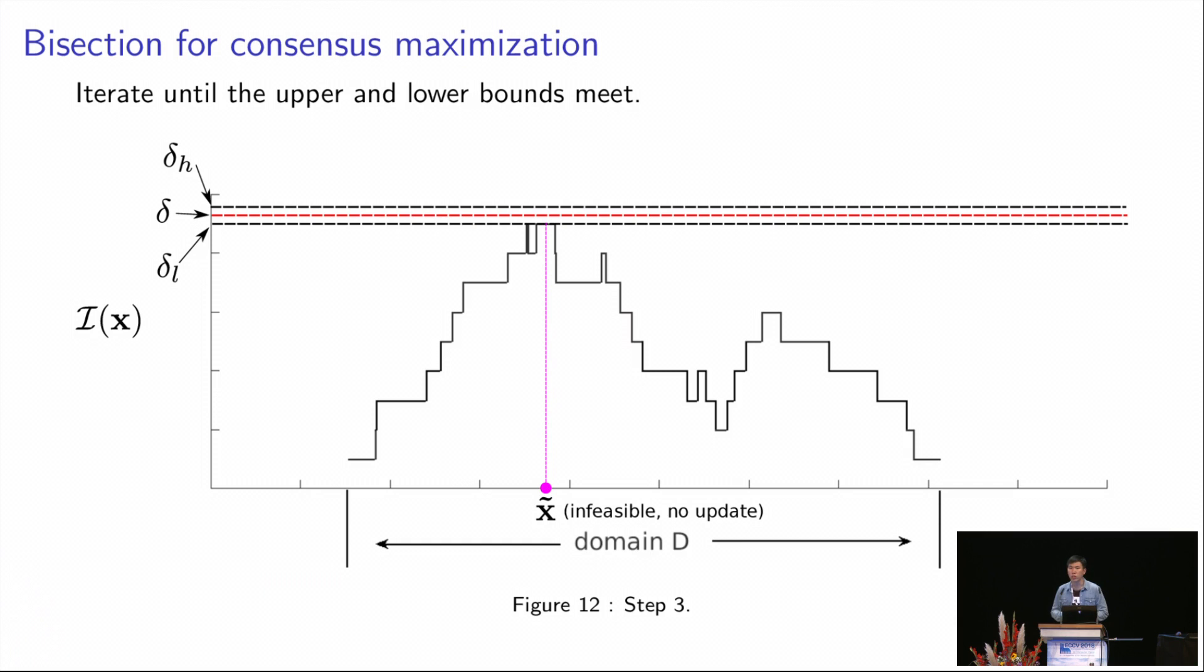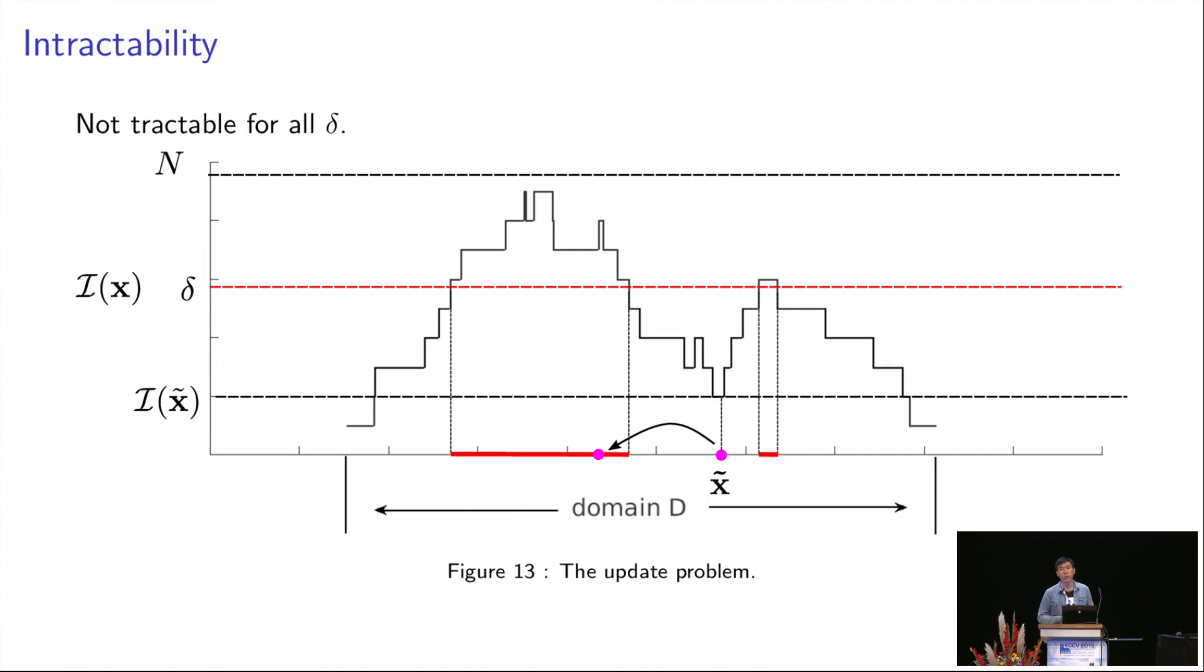However, a slightly negative result is that the update problem is not tractable for all delta, because its feasible region, as you can see, the red regions are non-convex. They are not even connected in general. So we don't hope to solve for all update problems. But we still hope to solve for most update problems efficiently using deterministic algorithms, so that we can still achieve a good enough solution for consensus maximization problem. To do this, we have to come up with an algorithm that can efficiently solve for each update problem.